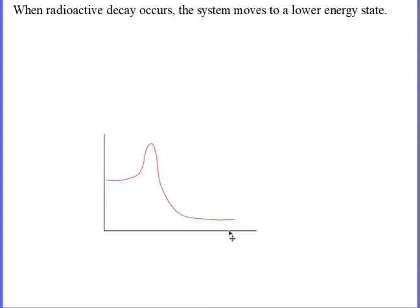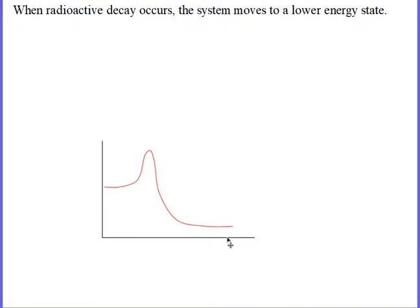We are going to have these reactions go on, especially the decays, and they are going to proceed because they go to a lower energy state. But there is an impediment — you have to go to a higher energy state before you can get to that lower energy state, and so it's impossible. And yet, it happens.